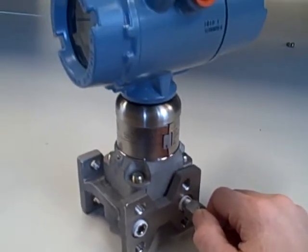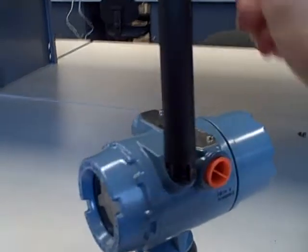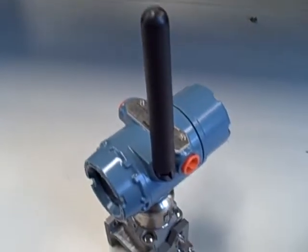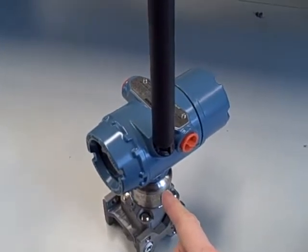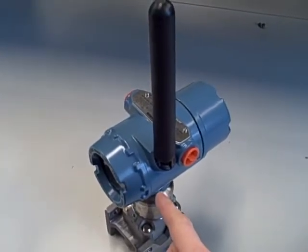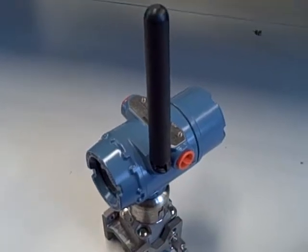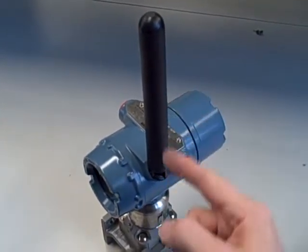But what's distinctive about this transmitter is the antenna. This is a wireless differential pressure transmitter. It does not use 4 to 20 milliamps. It does not use foundation field bus connections. There's no wired connections to this. It's all done wirelessly.